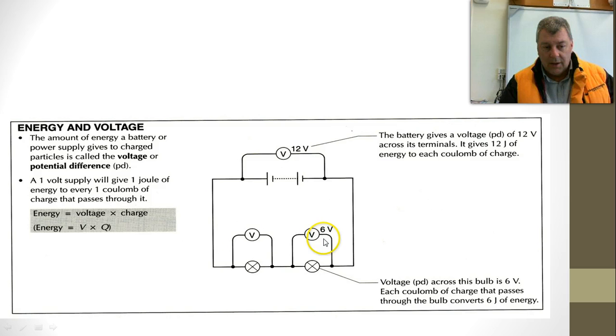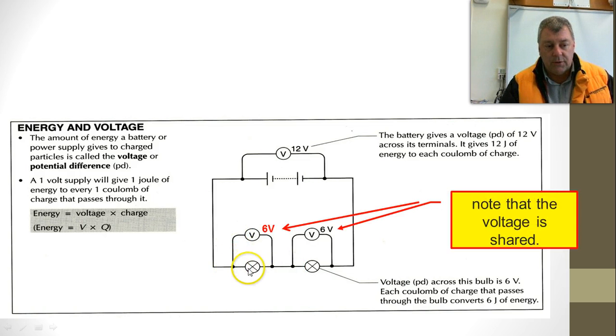Here we have a voltmeter measuring the potential difference between that point and that point. Here we have a voltmeter measuring the potential difference between that point and that point. It says 6 volts. This bulb also gets 6 volts because the voltage is shared. If we're putting 12 volts, that's a measure of how much push we're giving the electrons. We've got to have 12 volts in the circuit. Each of these globes gets 6 volts.